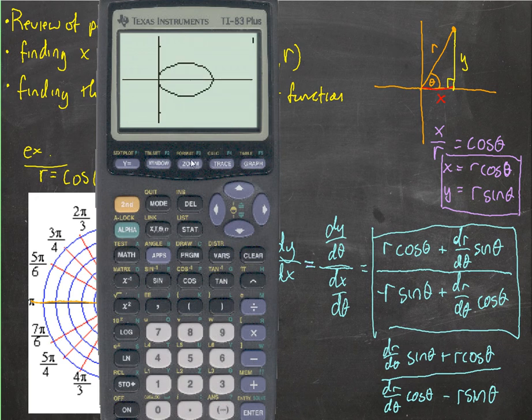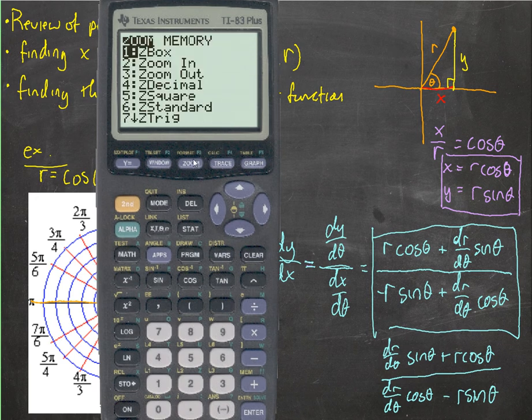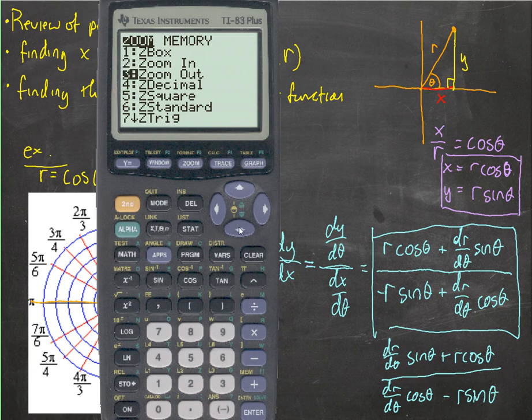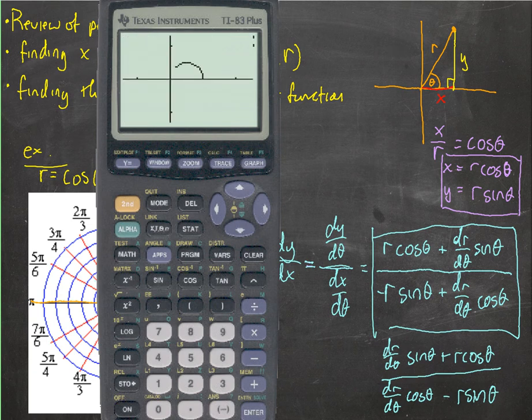So there we go. Now it doesn't look like a circle, so I'm going to go zoom square. Okay, so watch it draw it. Look how it's still thinking, still thinking. Why is it? It looked like the graph was done. Why was it thinking so hard?